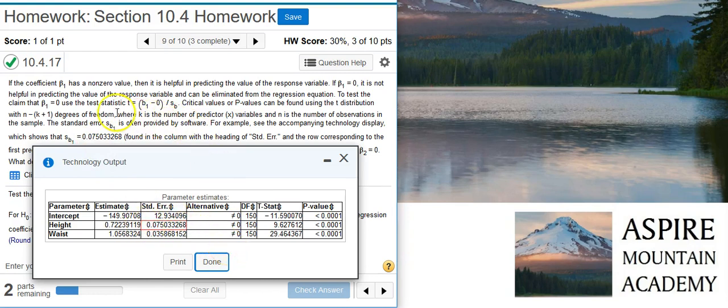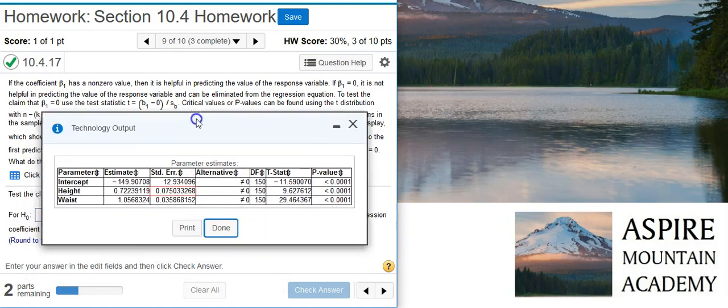But notice how all of this stuff where we're talking about calculating a test statistic and p-values and all that stuff that we need for hypothesis testing, all of that's already calculated for us here in these columns over at the end. Notice this is t-stat, and this says p-value. So the values that we actually need are found here in this table, and so we don't need to calculate anything. We just need to put the right numbers in the right places in our answer fields.